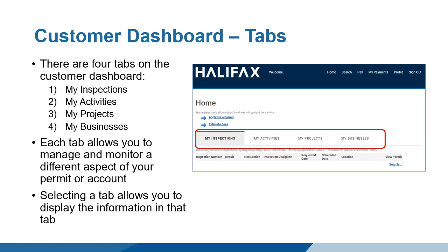There are four tabs on the Dashboard to allow you to manage different aspects of your permits. The tabs are My Inspections, My Activities, My Projects, and My Businesses. To view the information in a tab, simply click on the tab.